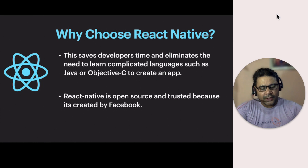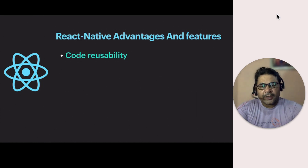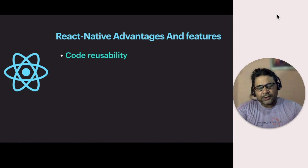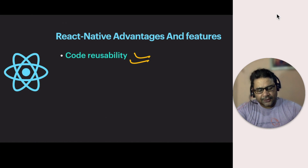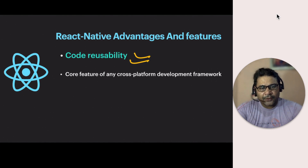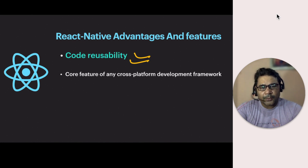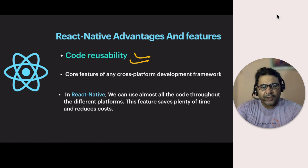React Native is open source and trusted, created by Facebook. Let's look at the features and advantages of React Native. The first feature is code reusability, which is the core feature of any cross-platform development framework. Whether you use Flutter, Ionic, or Xamarin, code reusability is fundamental. In React Native, you can reuse almost all of your code across different platforms, which saves plenty of time and reduces cost.